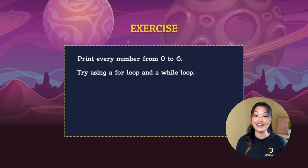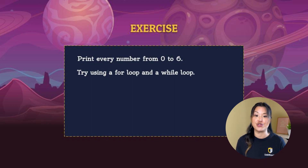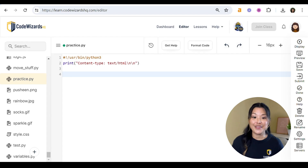Now let's give this a try — let's try writing our own loops. We're going to print every number from zero to six, and we're going to do that two different ways: once with our for loop and once with our while loop. Go ahead and hop on over to your editor, whichever text editor is your favorite. I'm going to be using the Code Wizards HQ editor.